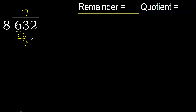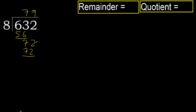Next: 72. 8 multiplied by 9 is 72, which is not greater. Subtract: 72 minus 72 is 0.